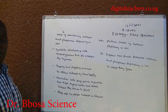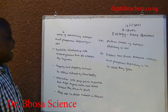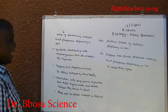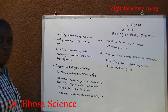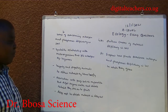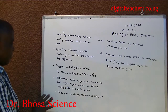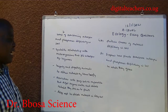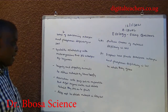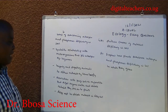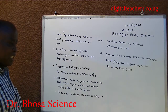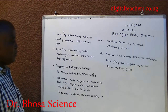B. Plants overcome nitrogen and phosphorus deficiency through: symbiotic relationship with microorganisms that can fix nitrogen, for example legumes. Trapping and digesting animals to obtain nutrients, for example Venus flytrap. Free association with fungi such as mycorrhiza that digest organic matter and absorb nutrients they pass on to the plants. Developing deep roots to absorb nutrients in deep soil.